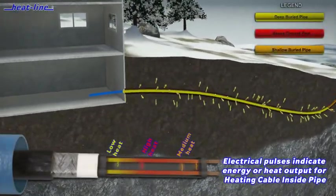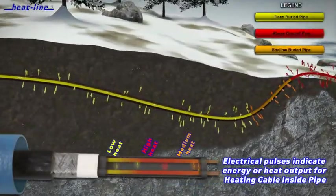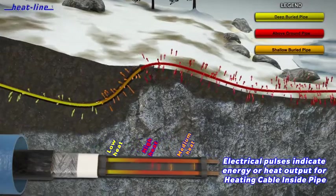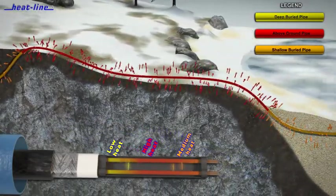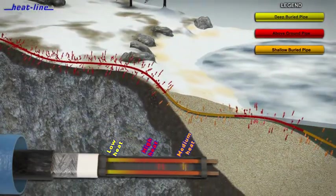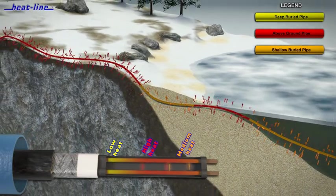As the water pipe gets colder, the heating cable automatically increases heat output in that area. As the pipe warms, the heating cable automatically reduces heat output in that specific area.